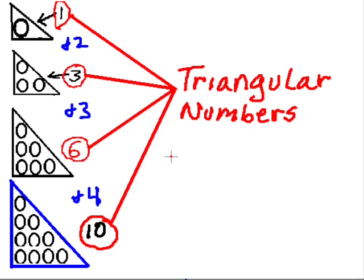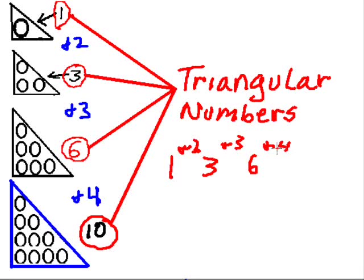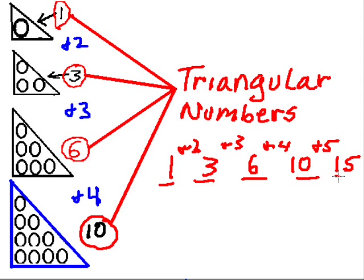And how do you add them? Start with one, add two, you get three. Add three, you get six. Add four, you get ten. Add five, you get fifteen. Every single one of these numbers are triangular numbers, and you can make these kinds of triangles out of them.